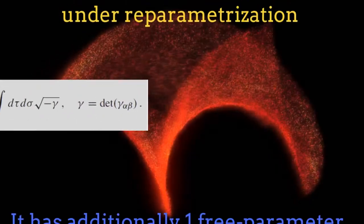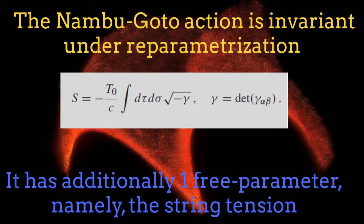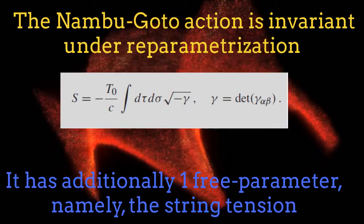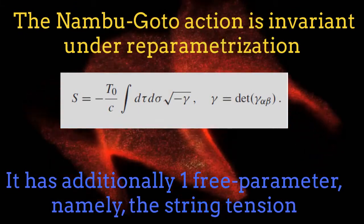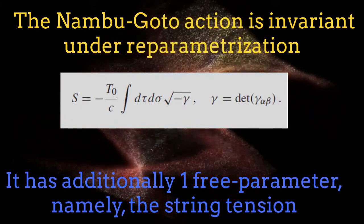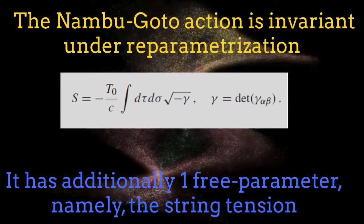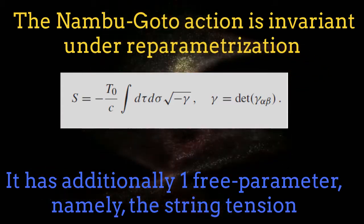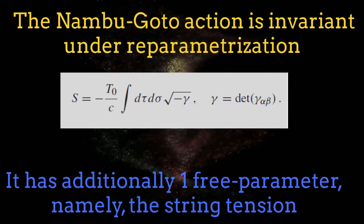The Nambu-Goto action is invariant under changes of parametrization. The parameters in question are the spatial and temporal coordinates of the string itself. Besides this, the Nambu-Goto action contains one free parameter, namely the string tension.